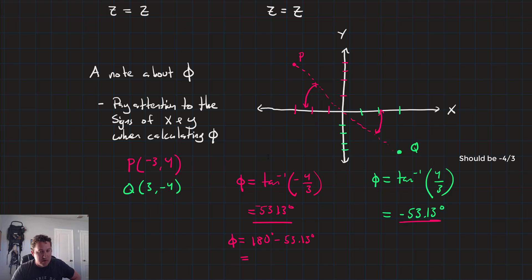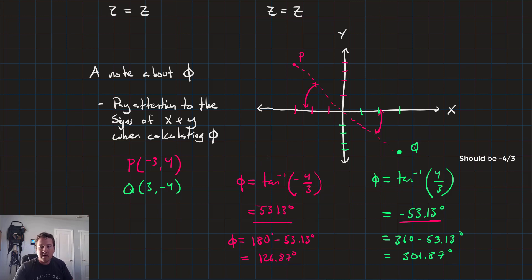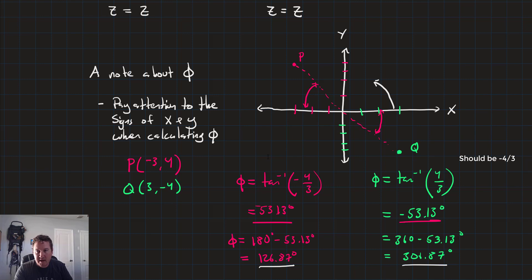And for Q we need 360° - 53.13° = 306.87°. When converting and finding theta, make sure you pay attention to the signs of x and y to get the right results. Remember, all angles are measured off of the positive x-axis.